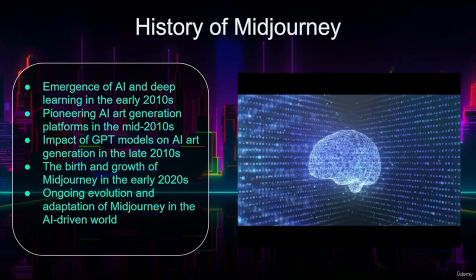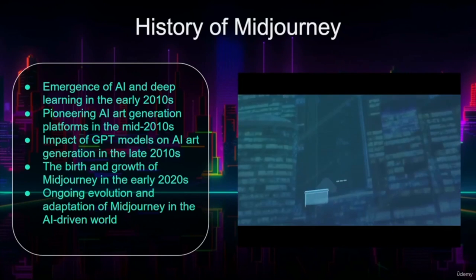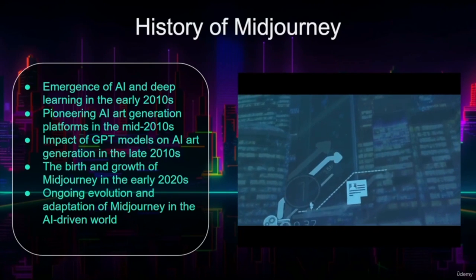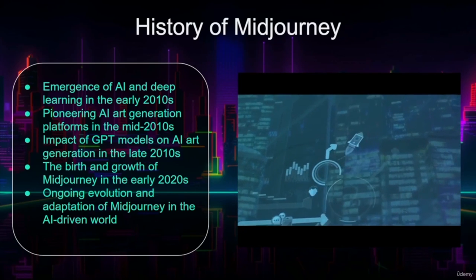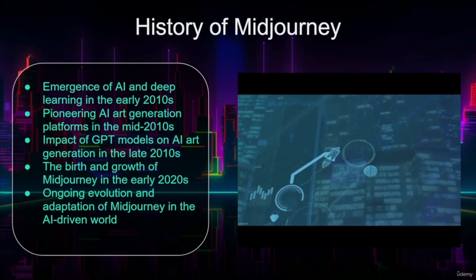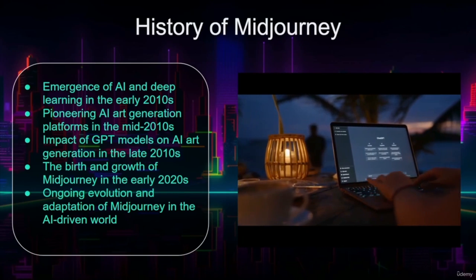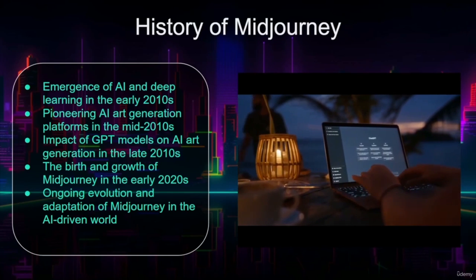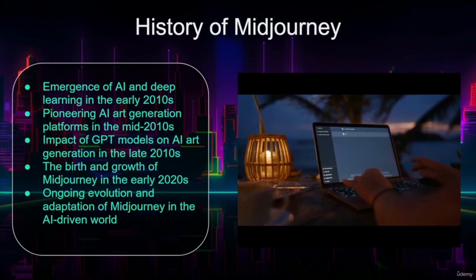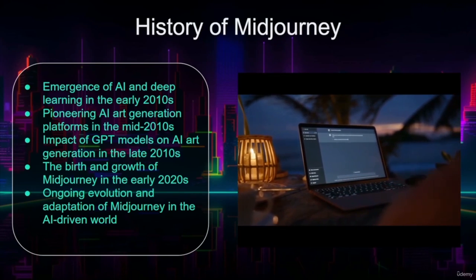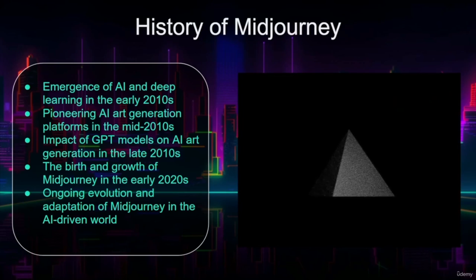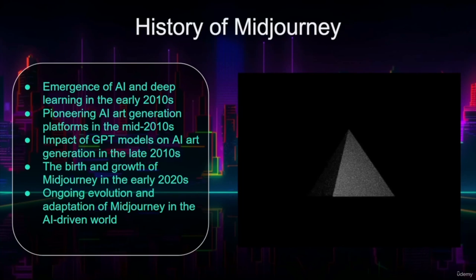In 2018, OpenAI released the first iteration of its GPT — Generative Pre-Trained Transformer — model, which revolutionized the field of AI. GPT-2, released in 2019, and GPT-3, released in 2020, further expanded the capabilities of AI in generating text, images, and other creative outputs. These advancements inspired the development of MidJourney, which leverages GPT-4 architecture to generate a wide array of artistic and design concepts. MidJourney was launched as a cutting-edge AI art generation platform, quickly gaining popularity among artists, designers, and creatives.